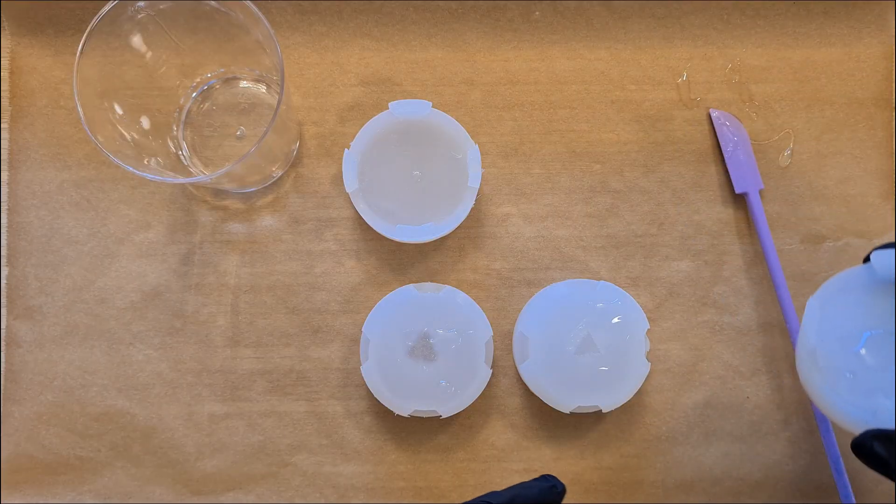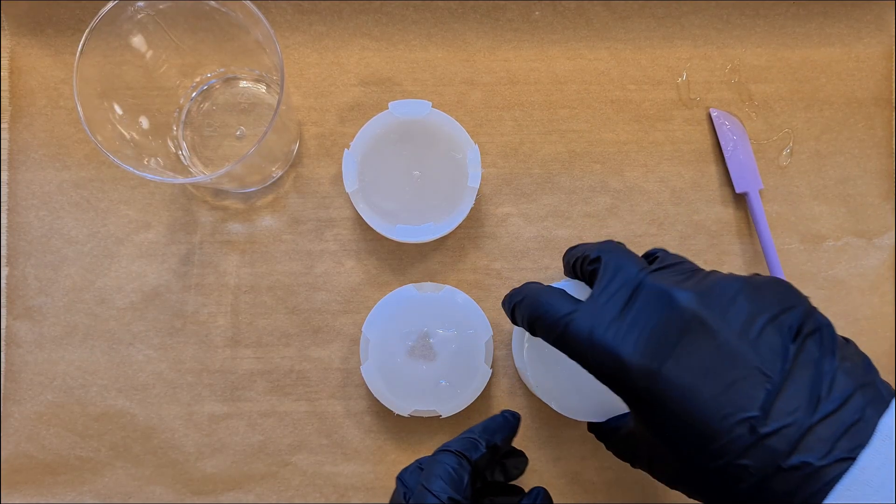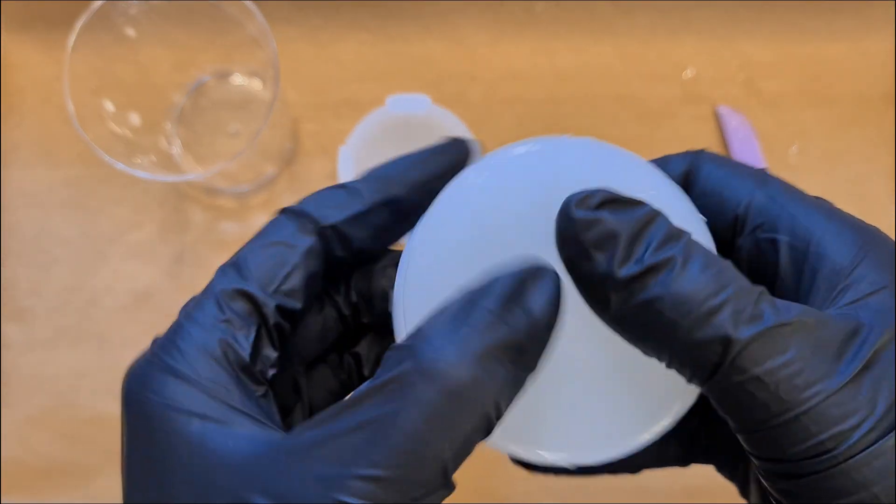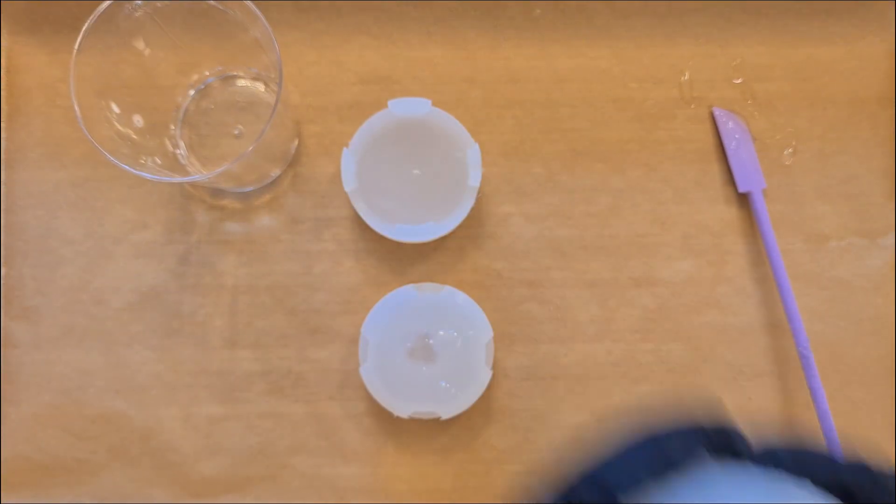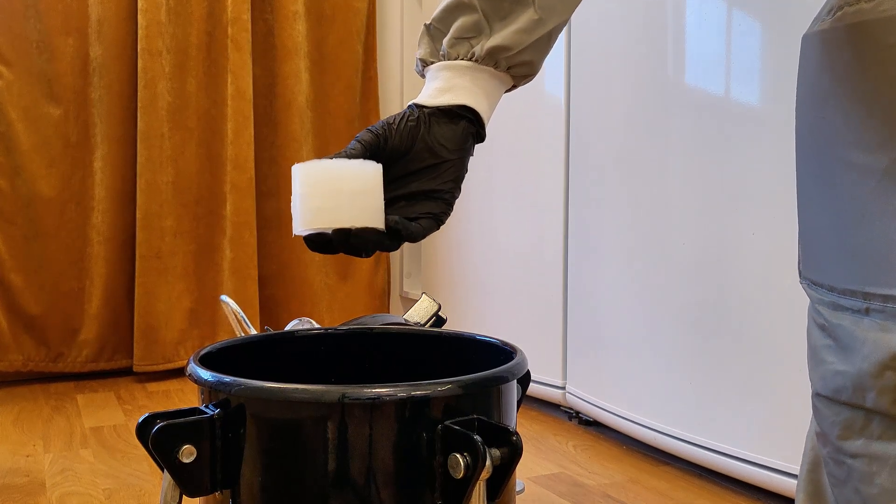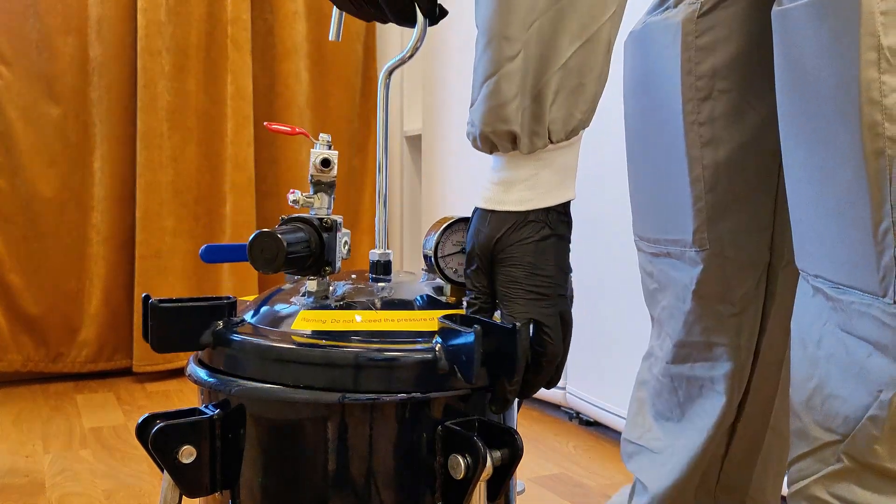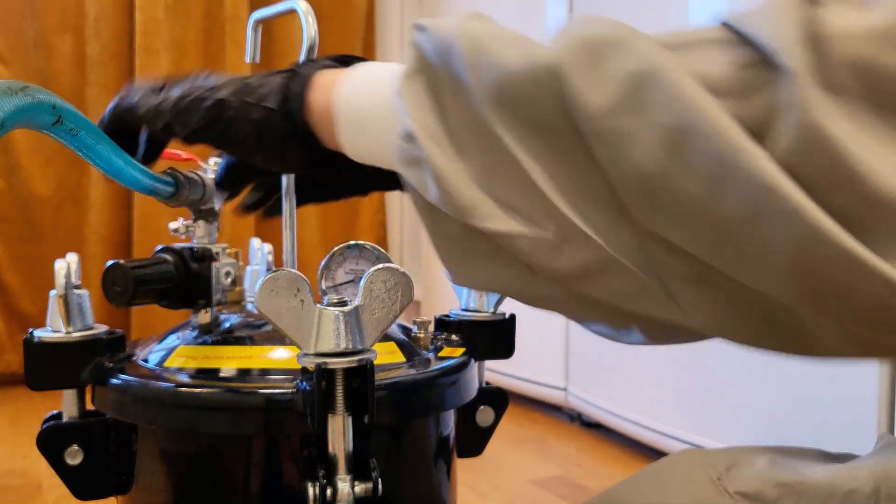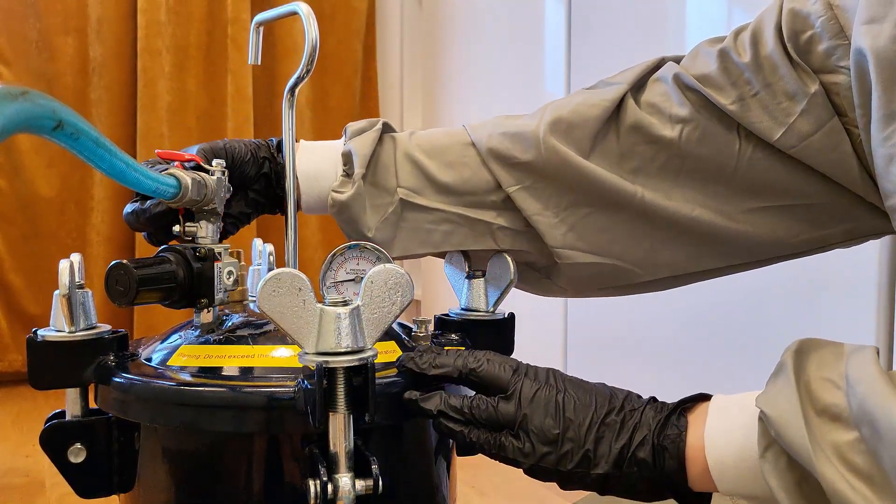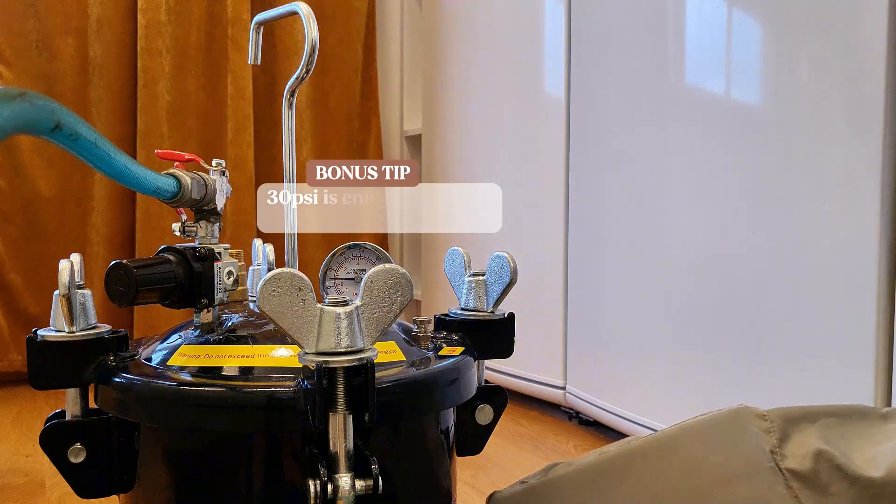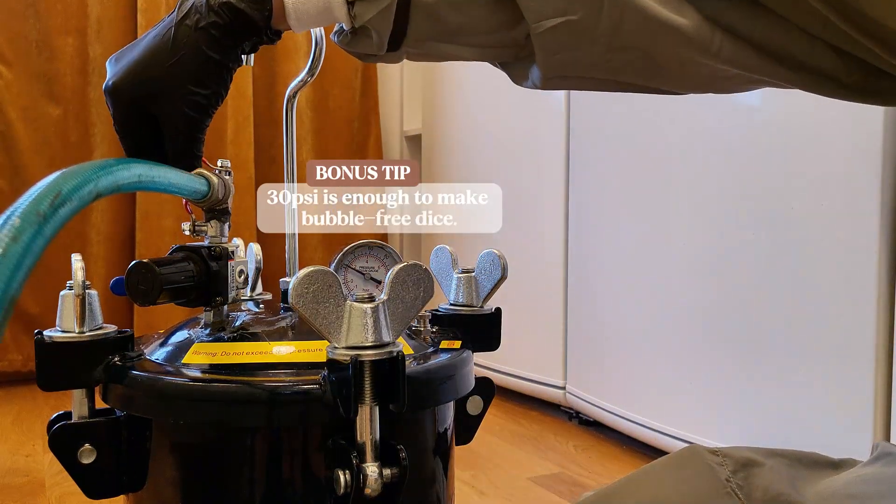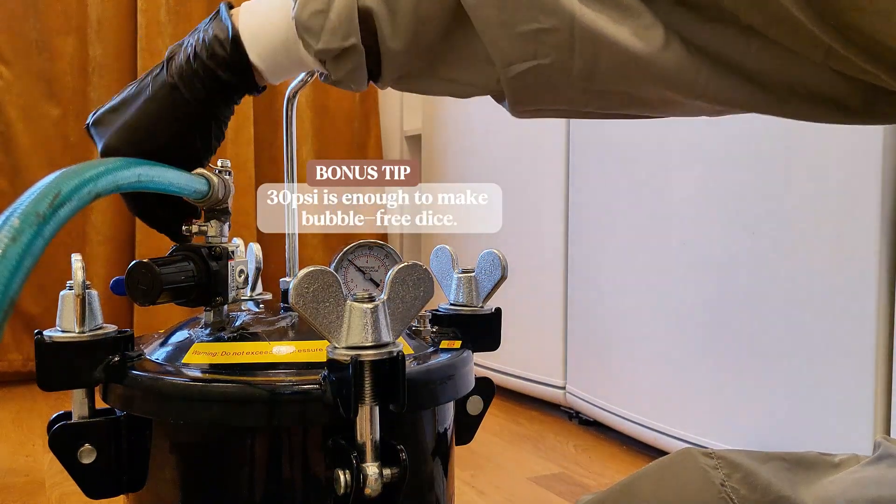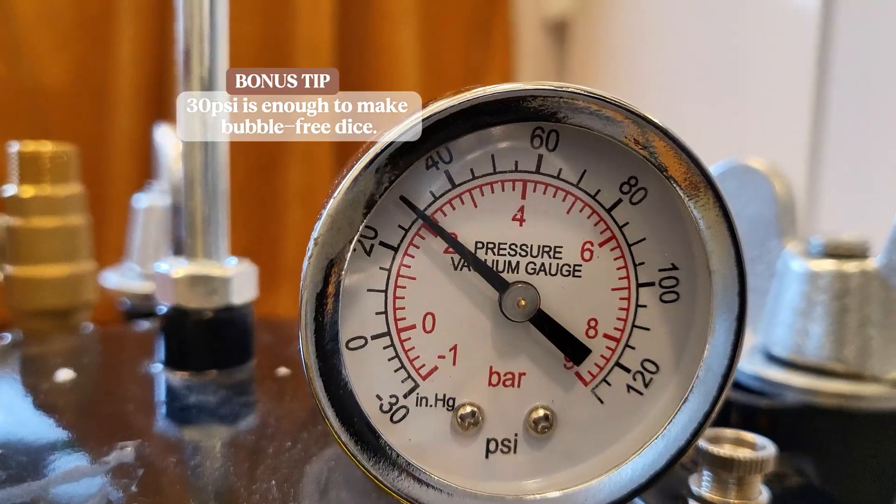For the one mold that's going into the pressure pot, I basically just squish on the lid and also squeeze out all of the excess resin. And then it goes straight into my pressure pot. I will secure the lid and also connect my compressor, which I will fill this pressure pot with 30 psi of air. Not more is needed. It is perfect to get bubble-free dice with 30 psi and not vortex the dice mold.